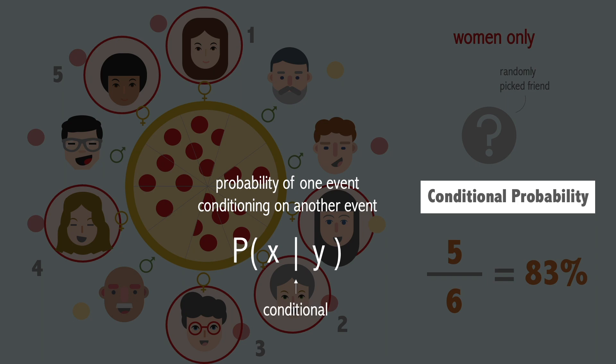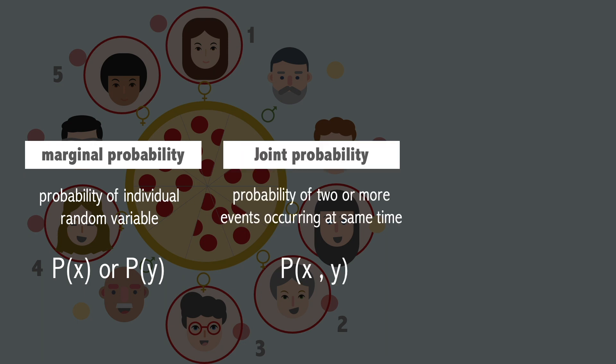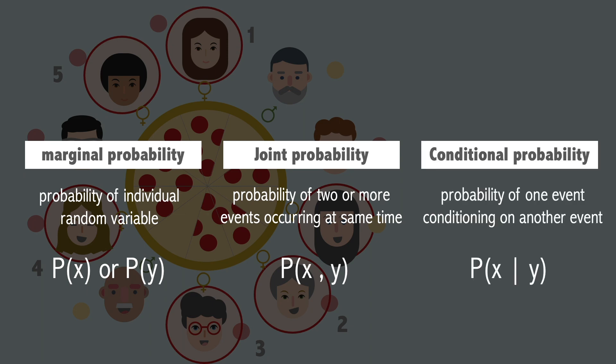Let's recap what we learned in this video. Marginal probability is where we observe the probability distribution of a single random variable. Joint probability is where we want to find out the probability of two or more events happening at the same time. And conditional probability is where we want to find out the probability of one event occurring while giving a condition on another event. In different settings, we use different types of probabilities to describe our data.